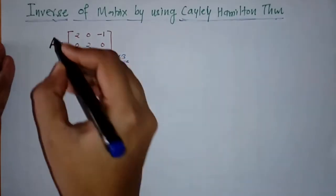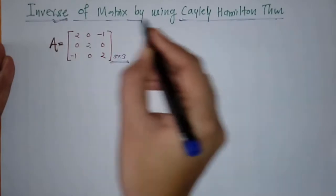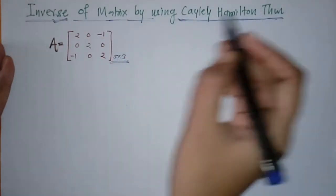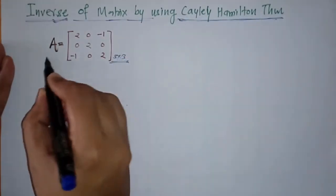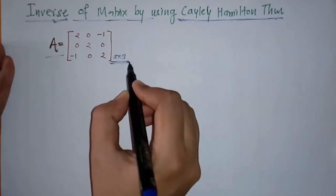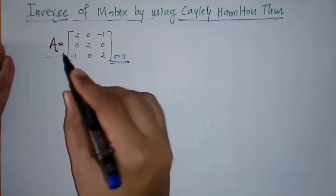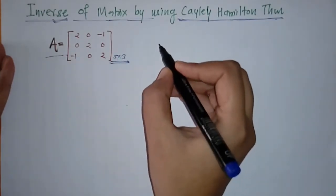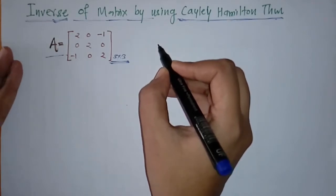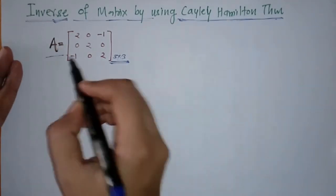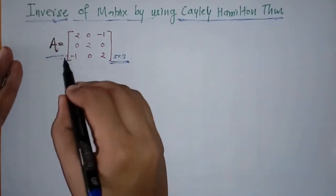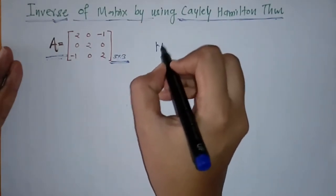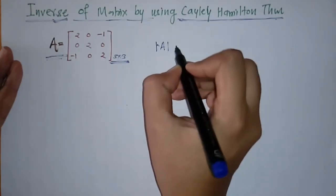Hello everyone, today we are going to see the inverse of a matrix by using the Cayley-Hamilton theorem. Here we have a given matrix A of order 3×3, and we have to find A-inverse. For this, we should check whether the inverse of this matrix exists or not, so we have to find the determinant of this matrix.